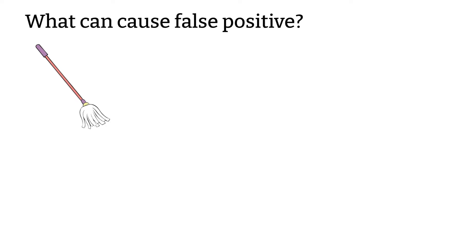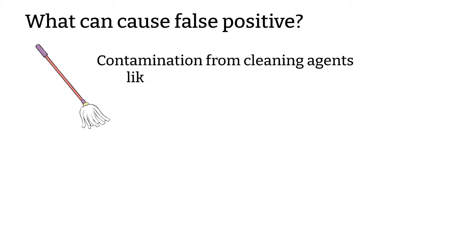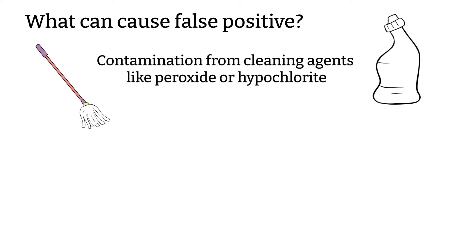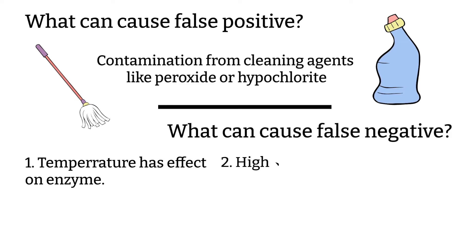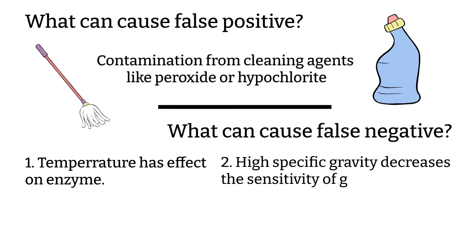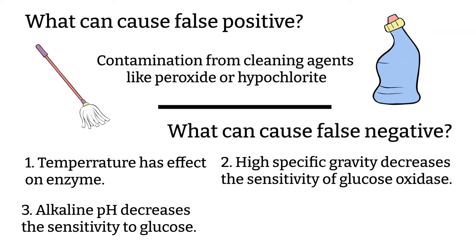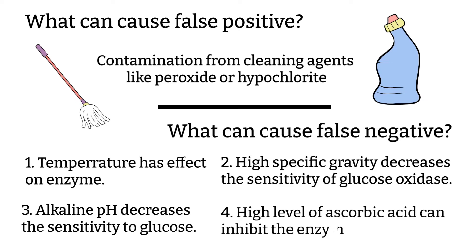What can give false positive test results? Contamination from strong oxidizing cleaning reagents like peroxide and hypochlorite. And what can give false negative test results? Temperature has an effect on enzyme reactivity, so it indirectly affects the test. If the specific gravity decreases, the sensitivity of glucose oxidase also decreases. Alkaline urine also decreases sensitivity for glucose. Another factor is a high level of vitamin C — a high level of vitamin C can inhibit the enzymatic reaction.